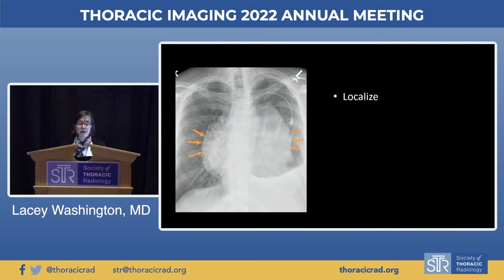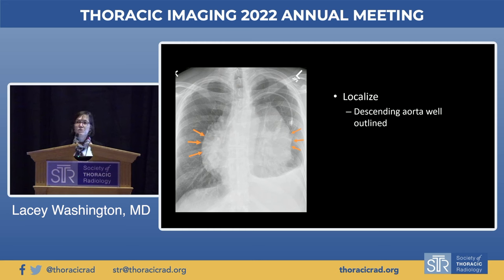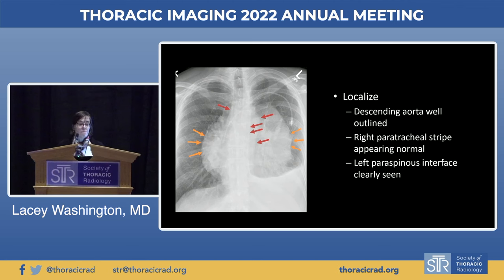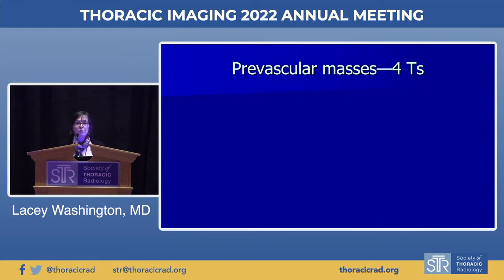We'll do this in a case-based format. Looking at this obviously abnormal chest radiograph — the anterior AP film — the first thing I notice is that the descending thoracic aorta is very well outlined and pretty normal in appearance. The right paratracheal stripe appears maybe a little abnormal but mostly not, nowhere near as abnormal as this big mediastinal mass. The left paraspinous interface is also seen pretty normally through the mass, suggesting it doesn't involve those structures. The heart border is not well seen, helping me localize this as a prevascular mass.